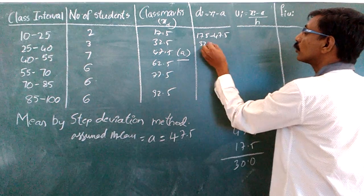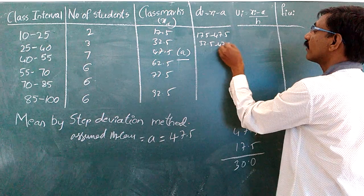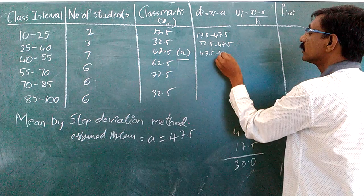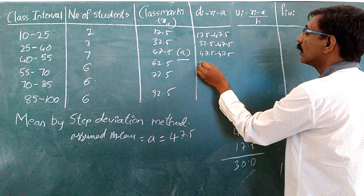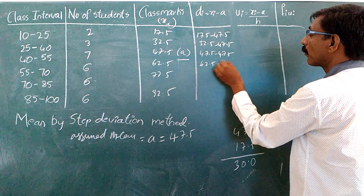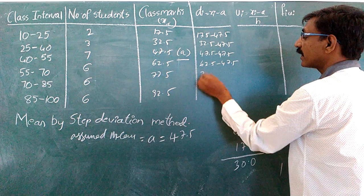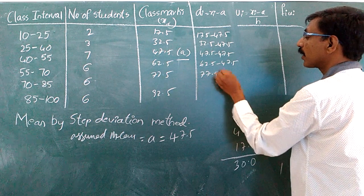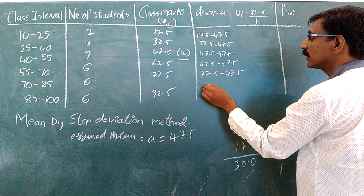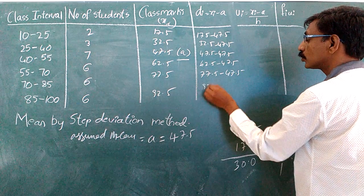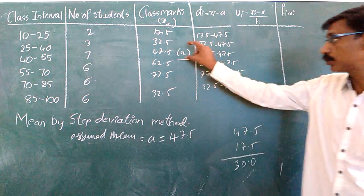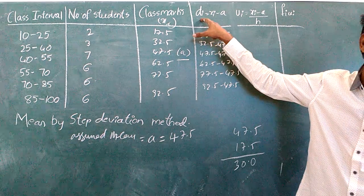Now we calculate the deviations: 32.5 minus 47.5, then 47.5 minus 47.5, then 62.5 minus 47.5, 77.5 minus 47.5, and 92.5 minus 47.5. These are the deviations di.